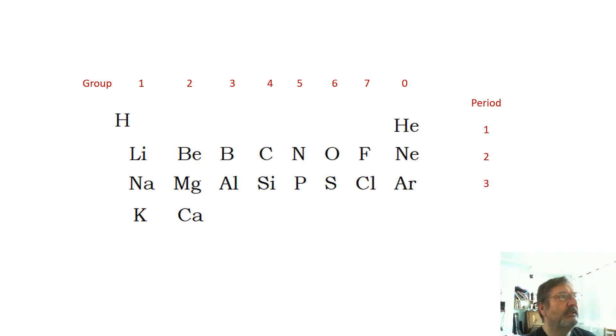The first 20 elements: groups 1, 2, 3, 4, 5, 6, 7, 0—those are the different groups. Hydrogen I draw on its own; it's a bit strange. It's not a metal, so officially it is group one but it's not a group one metal, so it's a bit odd on its own. Periods 1, 2, 3, and 4—potassium and calcium are period four.